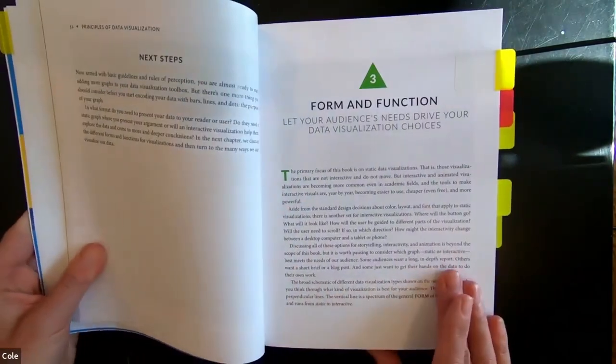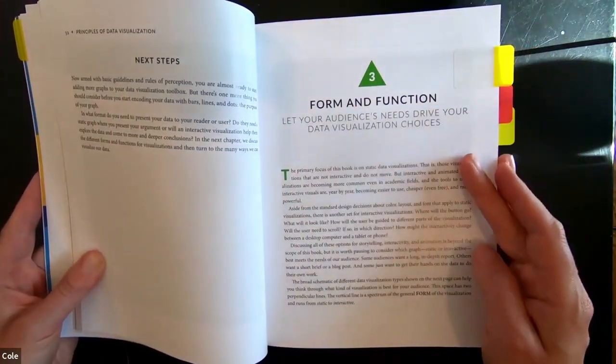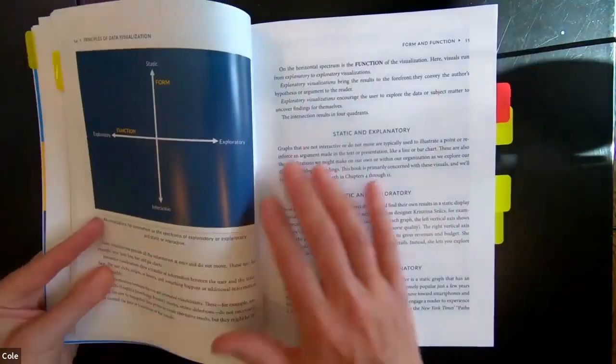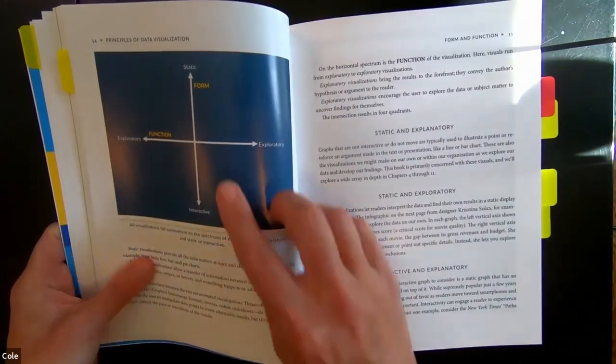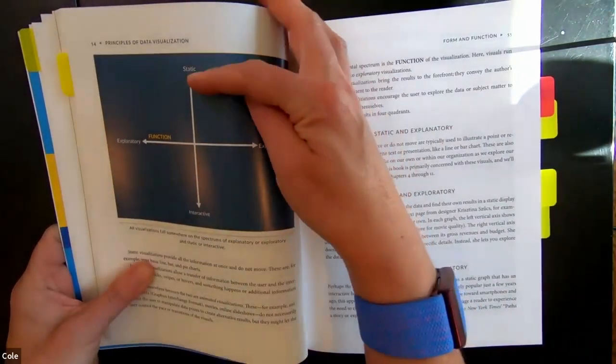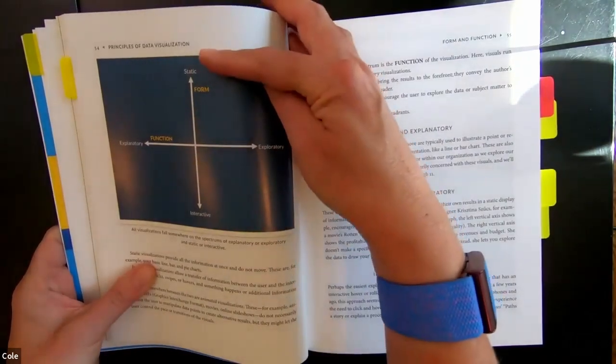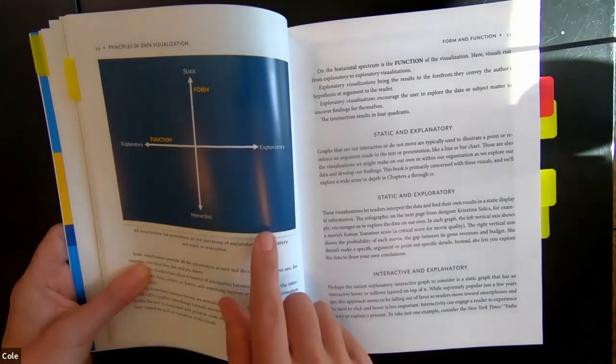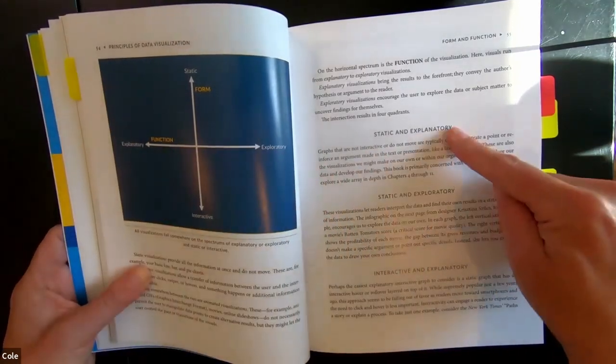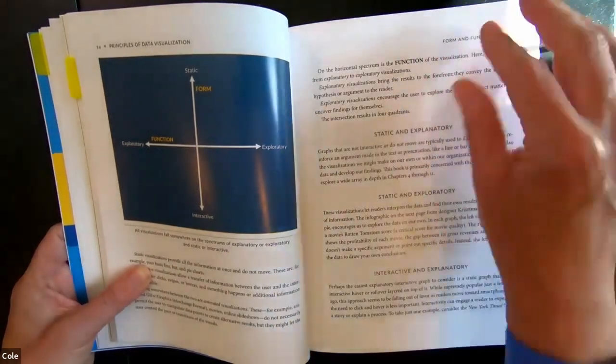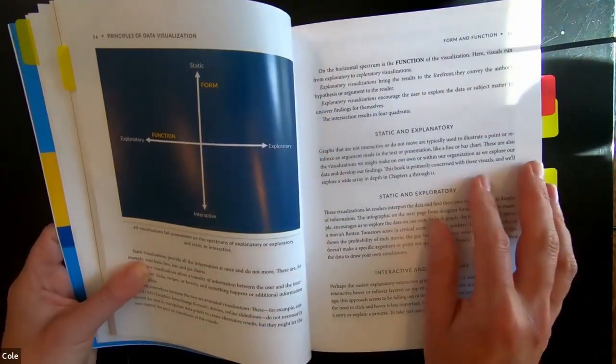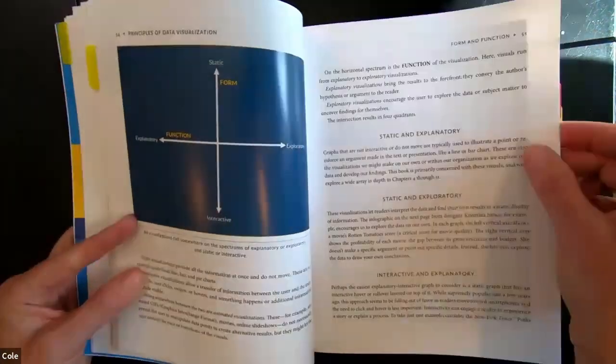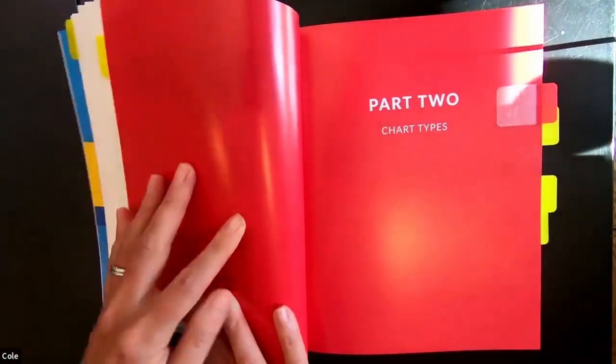So we'll take a look at that momentarily. I'm just going to flip through some of the book here. Actually in this first section, chapter three, form and function - let your audience's needs drive your data visualization choices. John introduces a matrix here. We have form going vertically, ranging from interactive at the bottom to static at the top, and then function across our horizontal axis, explanatory and exploratory. And John then goes on to describe each of these intersections, the quadrants, and when you might think about using visuals there.